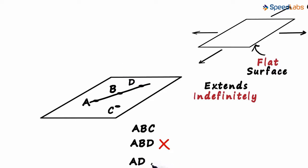Can it be called ADC? Of course yes. It can be called ADC as A, D and C do not form a straight line.